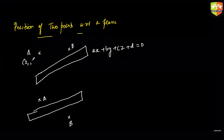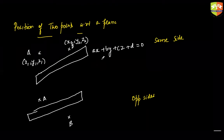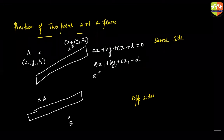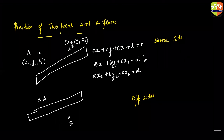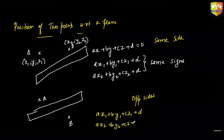Let A = (x1, y1, z1) and B = (x2, y2, z2). Put each point into the plane expression: evaluate (a·x1 + b·y1 + c·z1 + d) and (a·x2 + b·y2 + c·z2 + d). If these two values are of the same sign, then both points are on the same side. If these two values are of opposite signs, then they lie on opposite sides of the plane.